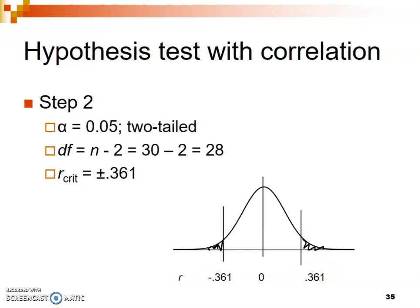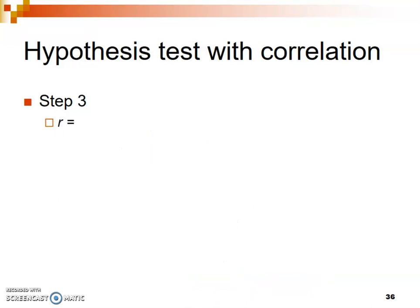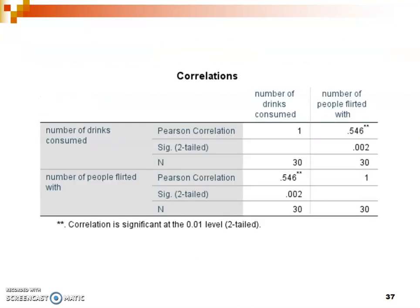If after measuring our correlation we find it to be more extreme than either of those two values, that would be a significant correlation. Let's look back at our actual SPSS data to see what the value of R was. SPSS gives you the correlation value in the output — rather than labeling it R, it labels it as 'Pearson correlation,' but remember that is your value for R.